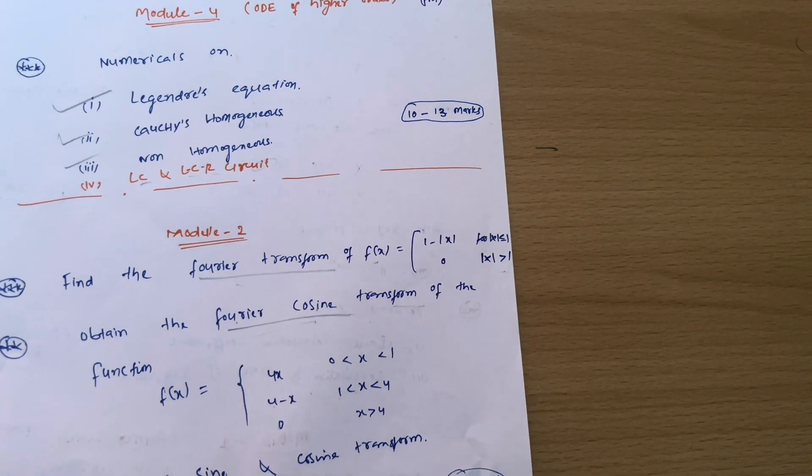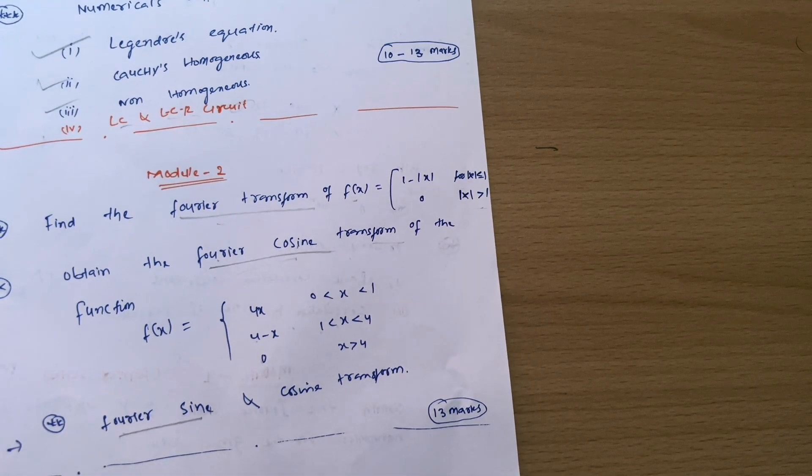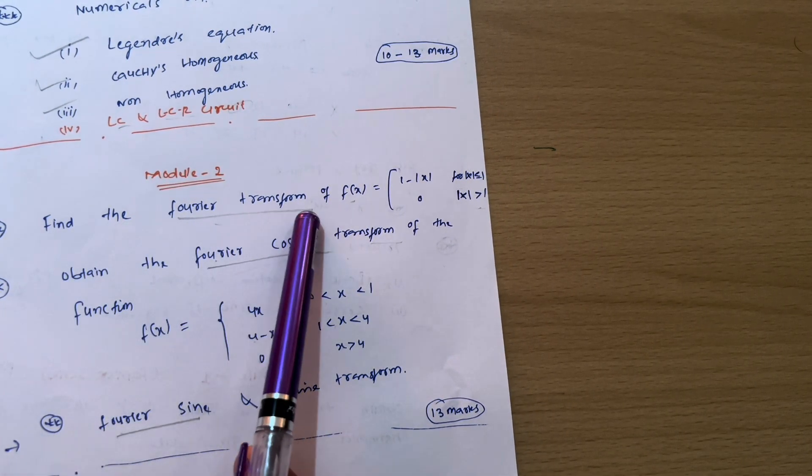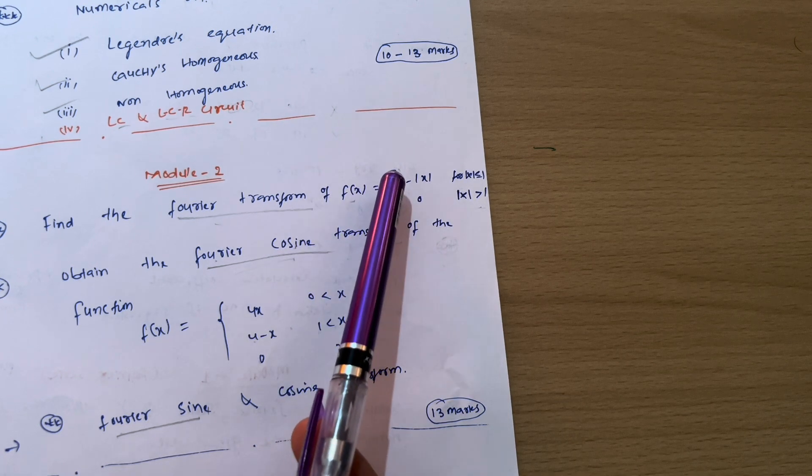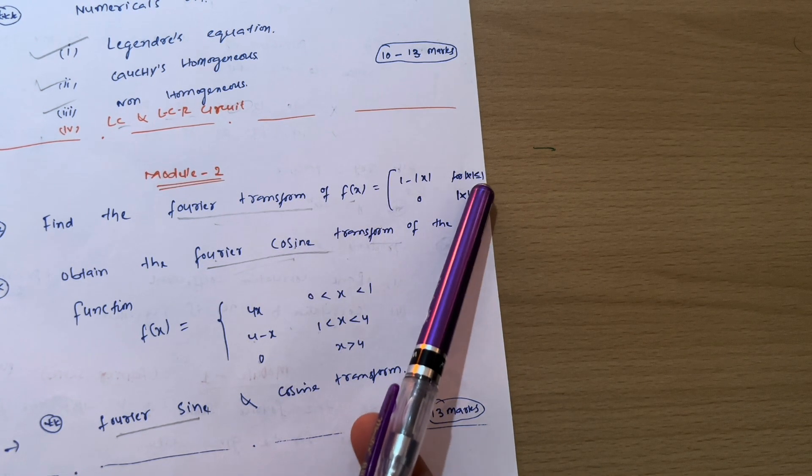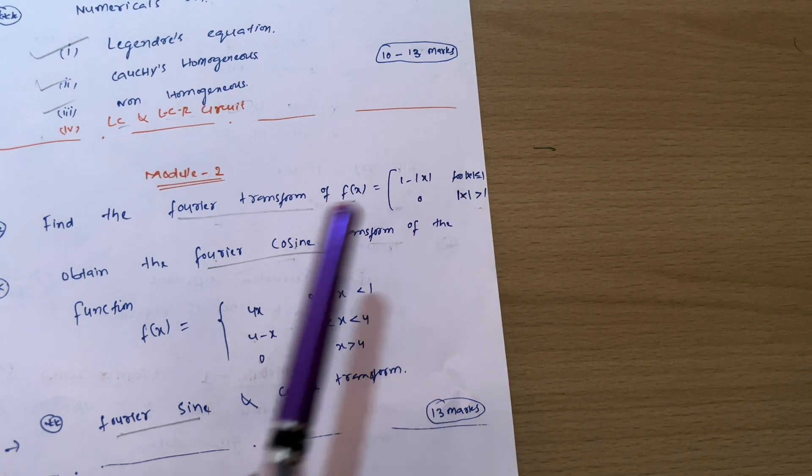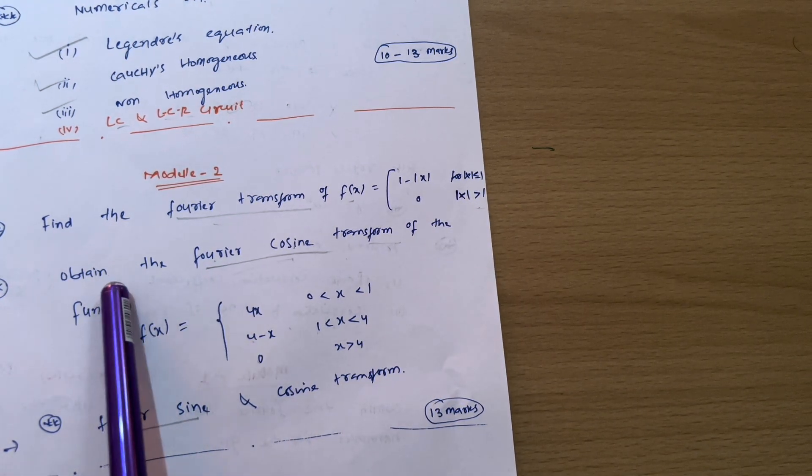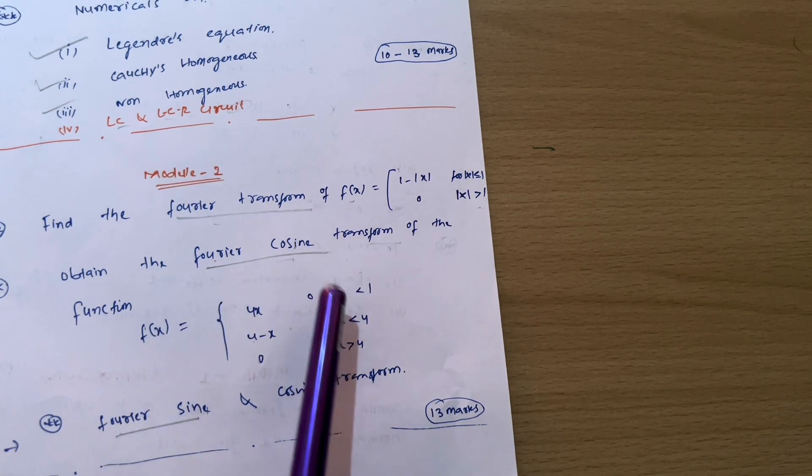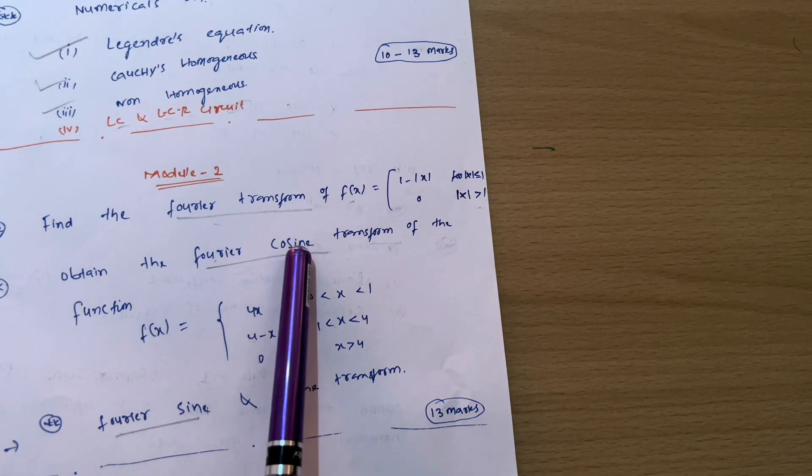Next we have module 2, that is Fourier transform. In which you have to go through these type of questions like find the Fourier transform of f of x equals 1 minus mod of x. Next function is 0. So for mod of x is less or equal to 1, mod of x is greater or equal to 1. And next question we are having here, obtain the Fourier cosine transform of the function. So function will be given, you have to obtain Fourier cosine transform.